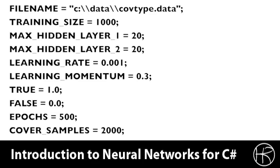We use 1,000 elements for the training set size. Hidden layer 1 and hidden layer 2 specify that we're going to use 20 neurons up to 20 neurons for each of the two hidden layers.